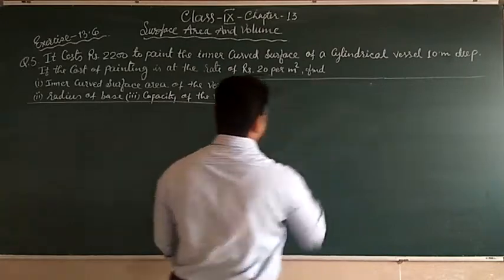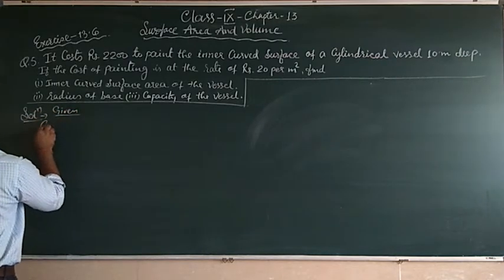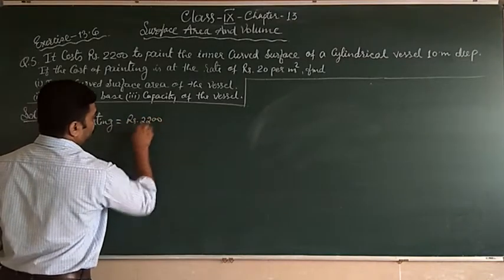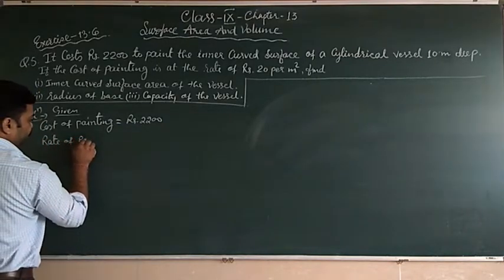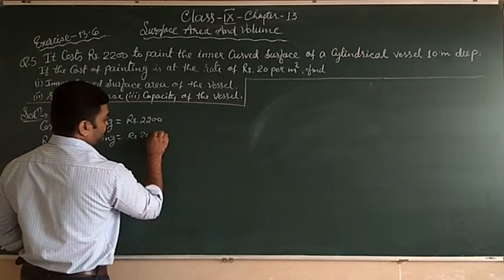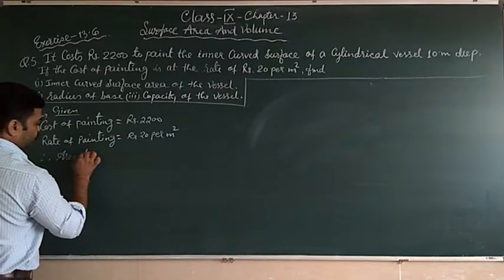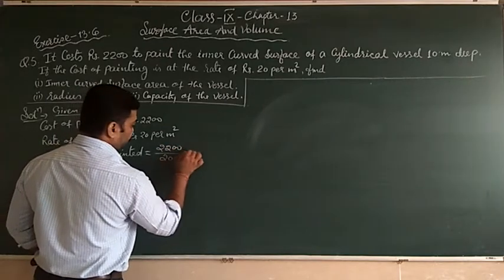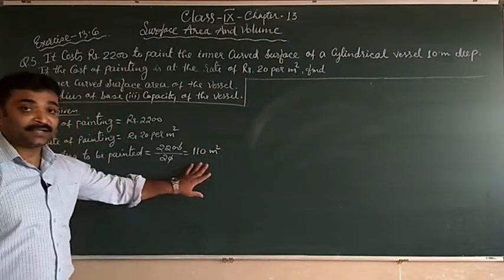We have given that cost of painting is equal to Rs 2200. Rate of painting is equal to Rs 20 per meter square. Therefore, area to be painted is equal to 2200 upon 20, that is 110 meter square.